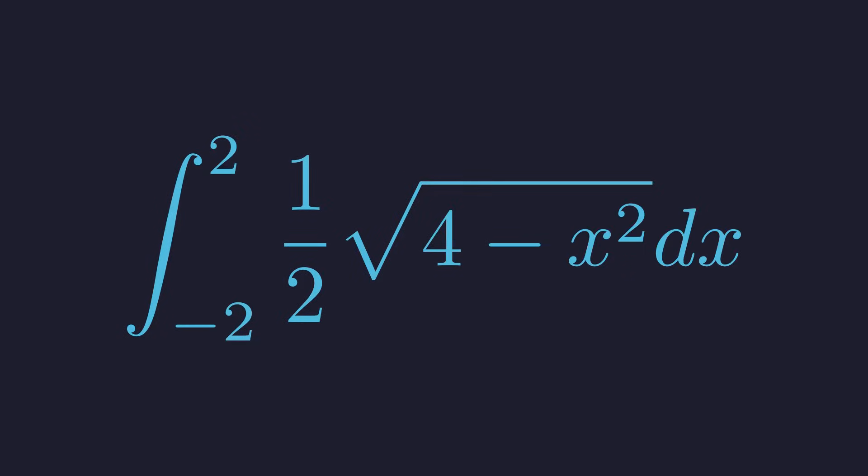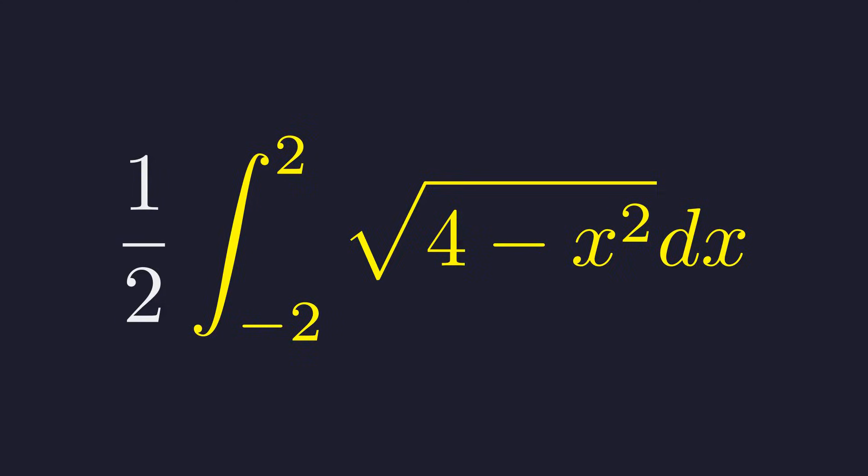First, let's pull that constant one half out in front. That makes things a bit tidier. Now this integral represents the area under a curve, specifically y equals the square root of four minus x squared, from negative two to two.